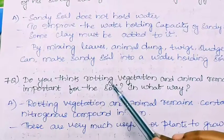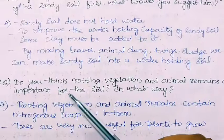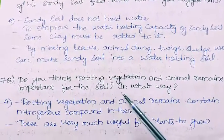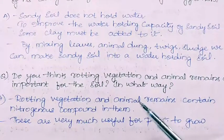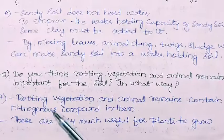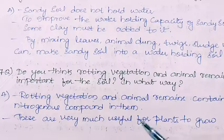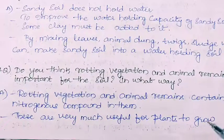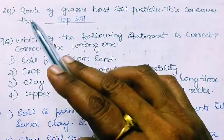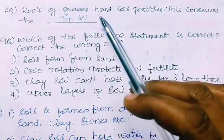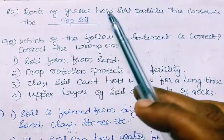Seventh question: Do you think rotting vegetation and animal remains are important for the soil? Rotting vegetation and animal remains contain nitrogenous compounds in them, so they are very useful for plants to grow. Eighth question (fill in the blank): Roots of grasses hold soil particles. This conserves the top soil.